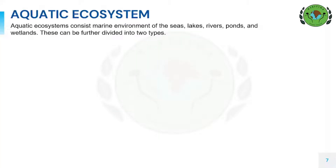Moving on to aquatic ecosystem. As the name suggests, in aquatic ecosystems plants and animals live in water, and these species are adapted to live in different types of aquatic habitats. The biotic peculiarities are the physical aspects such as the quality of water, which includes clarity, salinity, oxygen content and flow rate. These consist of marine environments of the seas, lakes, rivers, ponds and wetlands.